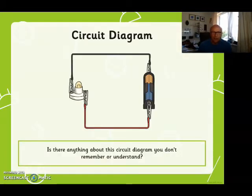Start off by looking at this circuit diagram and just ask yourself, is there anything about the circuit diagram you don't remember or understand? It's a very simple circuit. It shows a cell connected to either side of a bulb, and because it's a complete circuit, the bulb is alight.